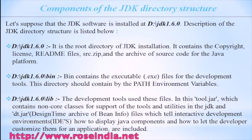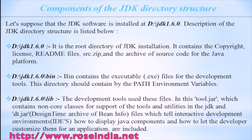JDK 1.6.0\bin contains the executable files of JDK. This directory should be included in the path variable. JDK 1.6.0\lib directory contains the files which are used by the development tools. It contains tool.jar, which has non-core classes for support of tools and utilities in the JDK, and dt.jar, which tells an interactive development environment (IDE) how to display Java components and how to let the developer customize them for an application.